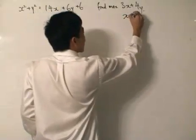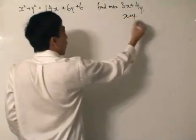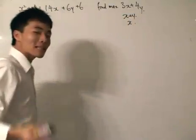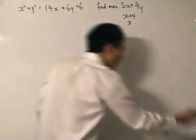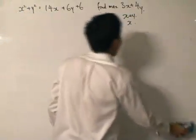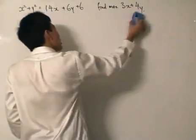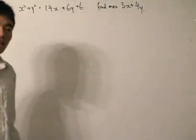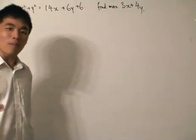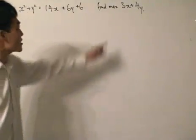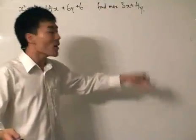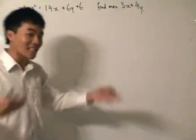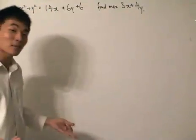We are finding the maximum of 3x plus 4y. So when we plot the circle, we must really choose the appropriate point such that 3 times its x value and 4 times its y value gives us the maximum value.